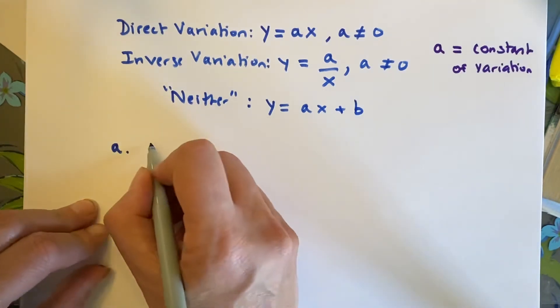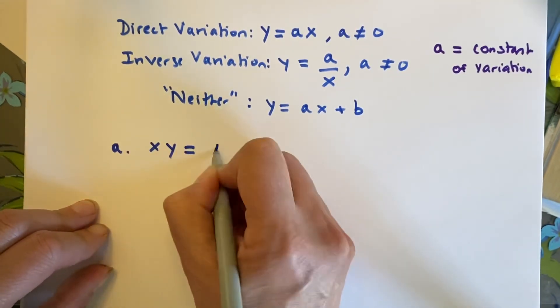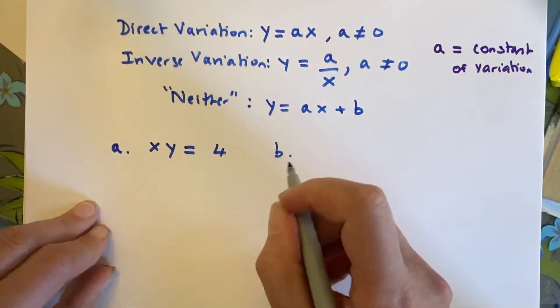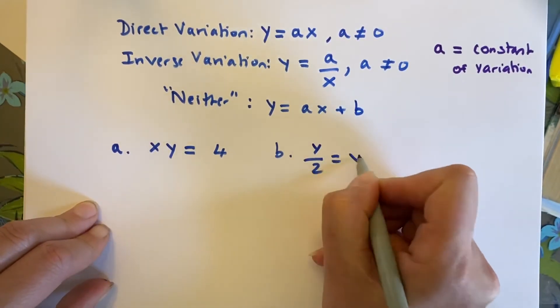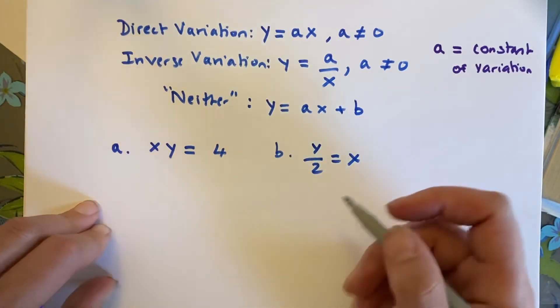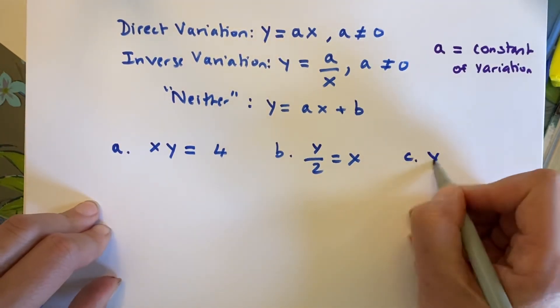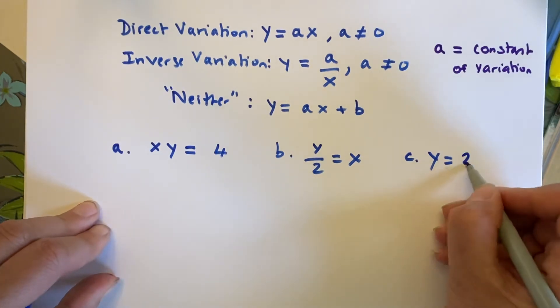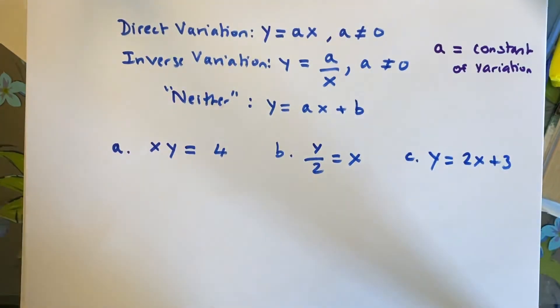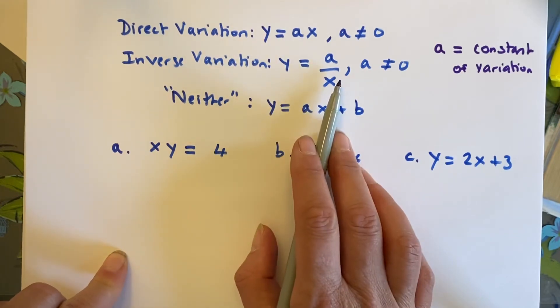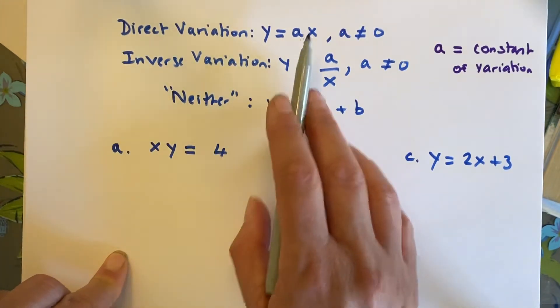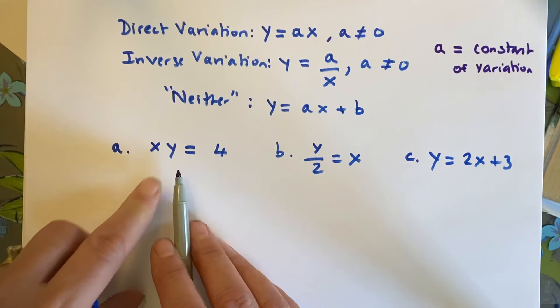And the first thing that you're going to have to figure out is, is something a variation or is it not? Is it in direct variation, inverse variation, or neither? So, I'm going to give you three possibilities. xy equals 4. y over 2 equals x. And c, y equals 2x plus 3. Now, to determine whether something is direct, inverse, variation, or neither, you have to put it in this form to know. So, I have to put it in a y equal form.